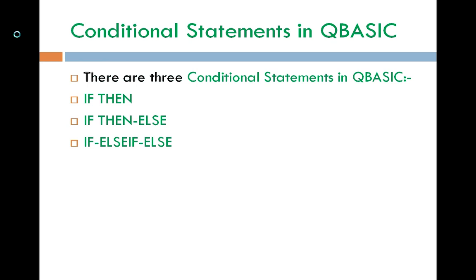Control statements are of two types: the first is conditional statements, and the second is loops. We will discuss loops in the next video, but in this video we are going to discuss conditional statements.